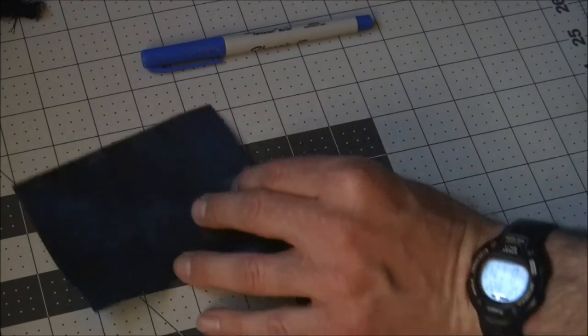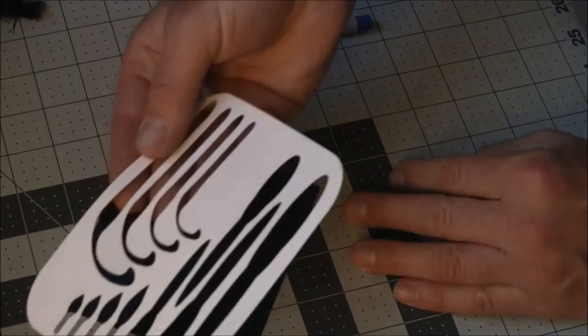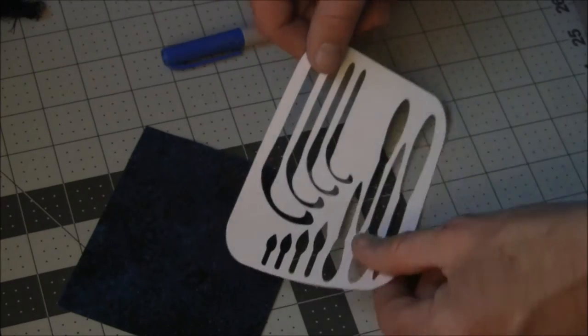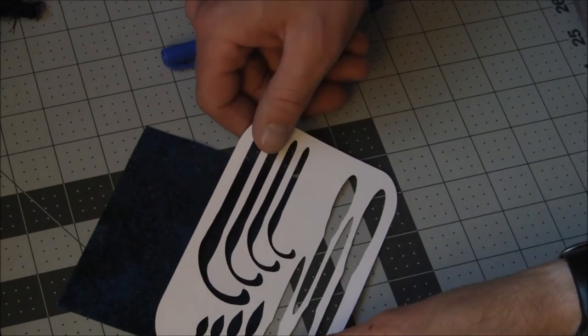Now I'm going to take my exo skin and lay down the one that I want to cut. I'm going to line it up in a corner and do a small one to start.